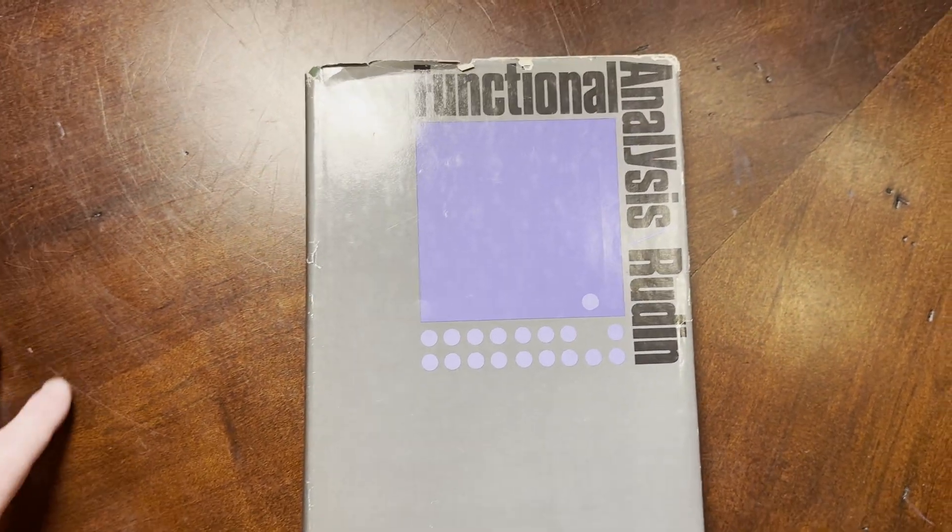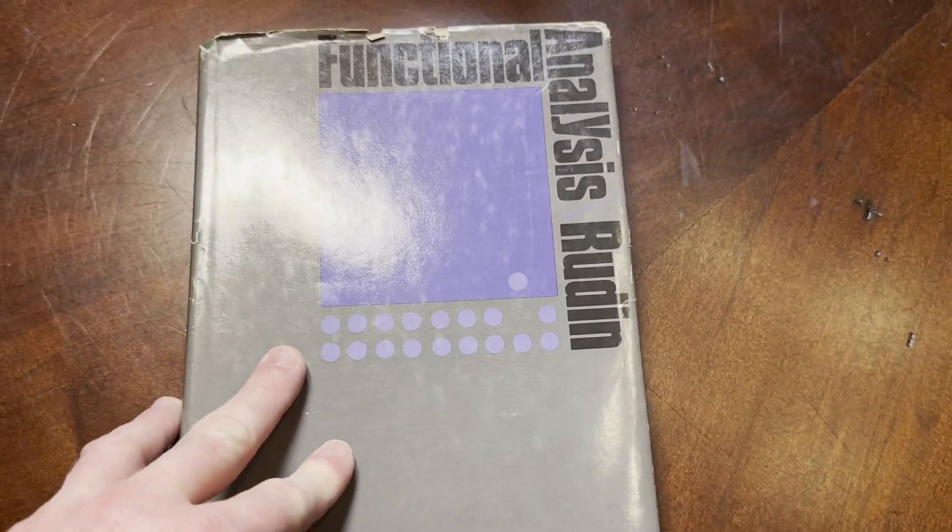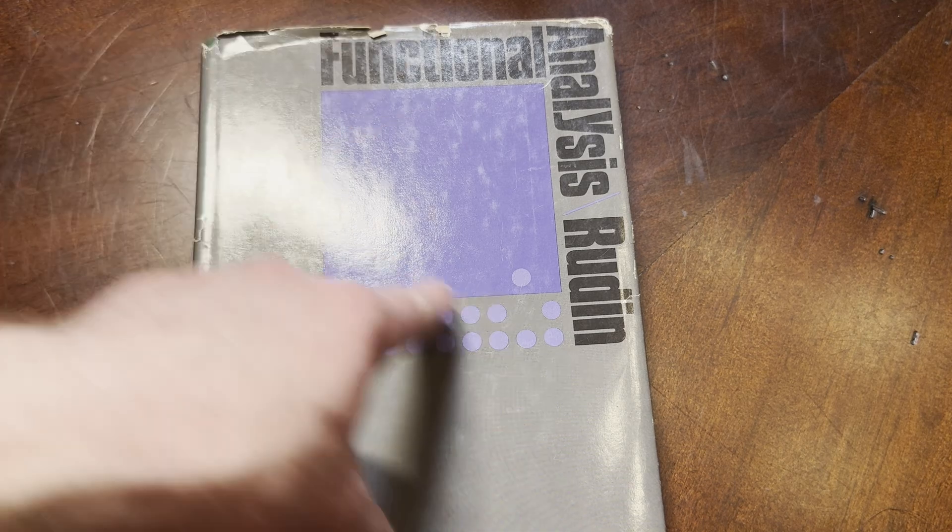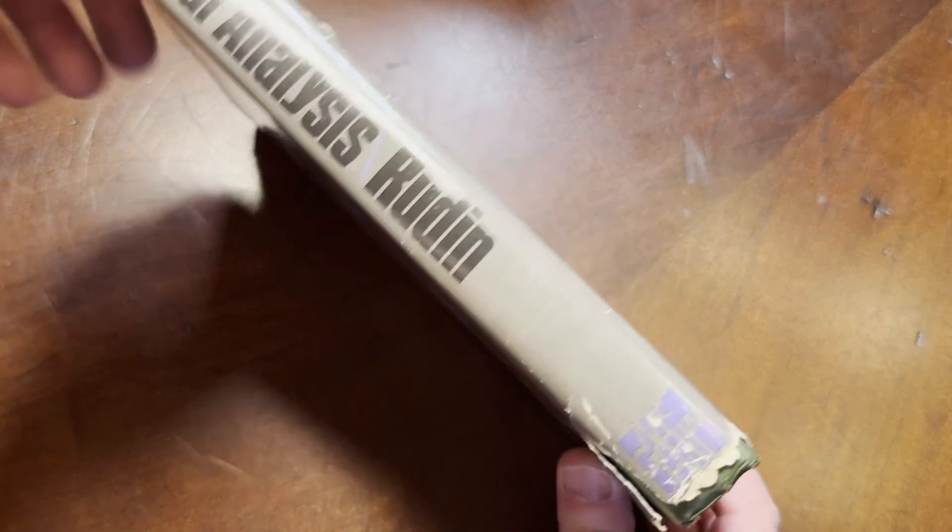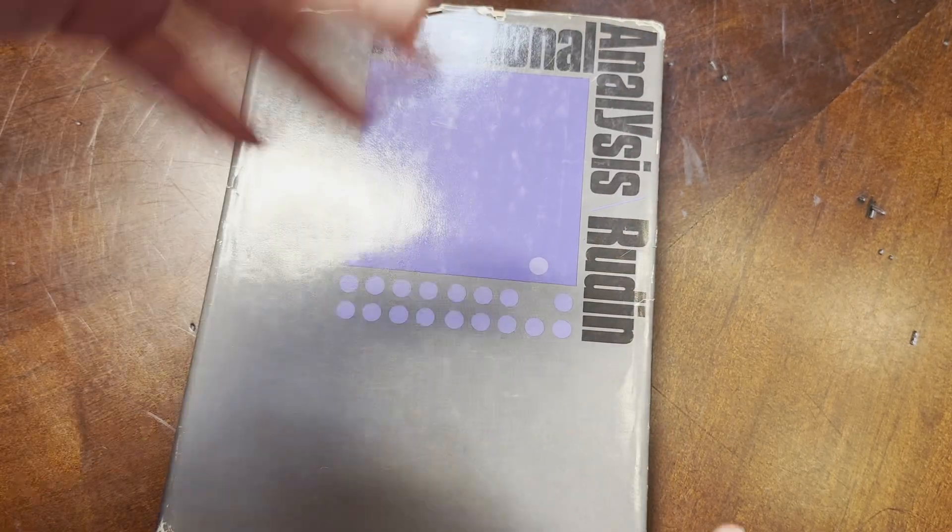Let me show you something about this book. I want to keep this video short. This is Functional Analysis by Rudin and it has the dust jacket. It's a really nice book, a great book on functional analysis.